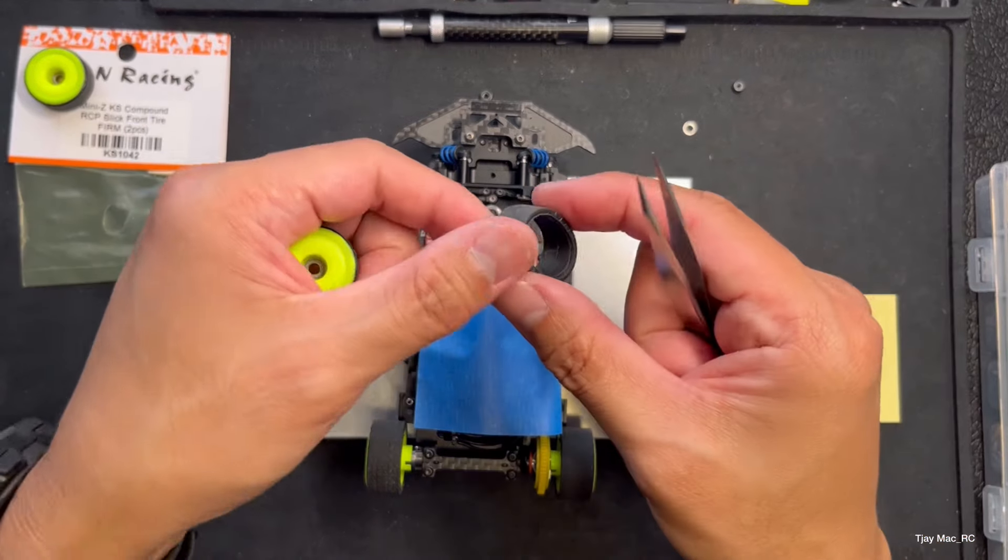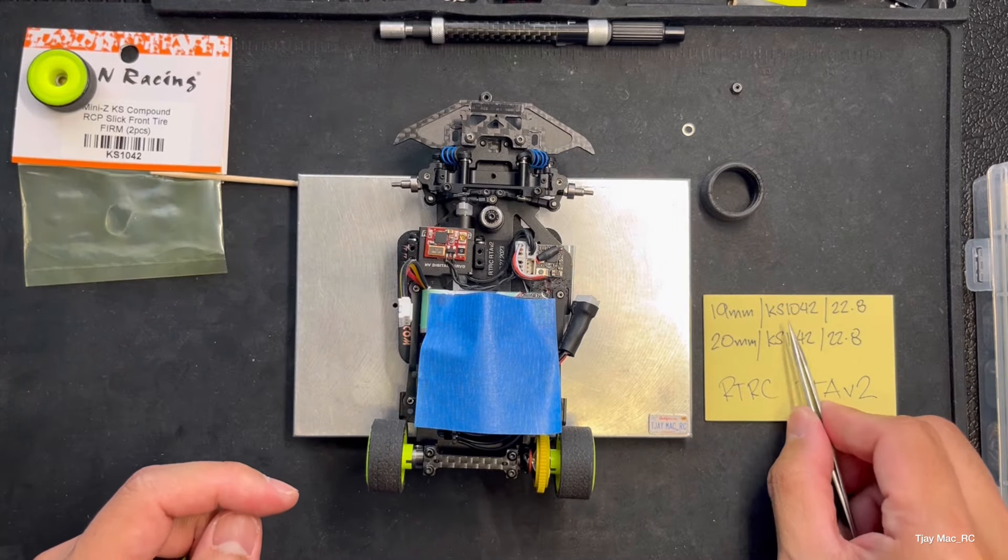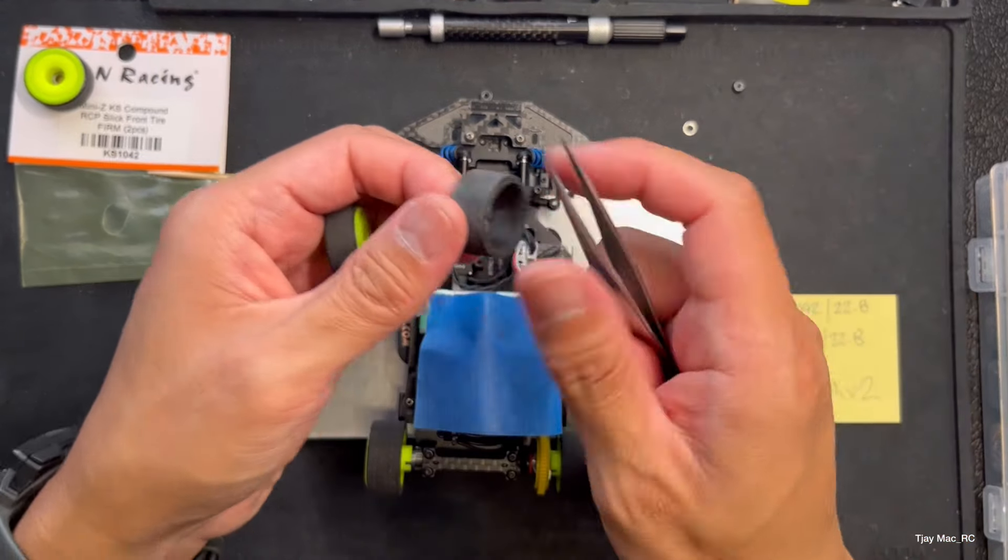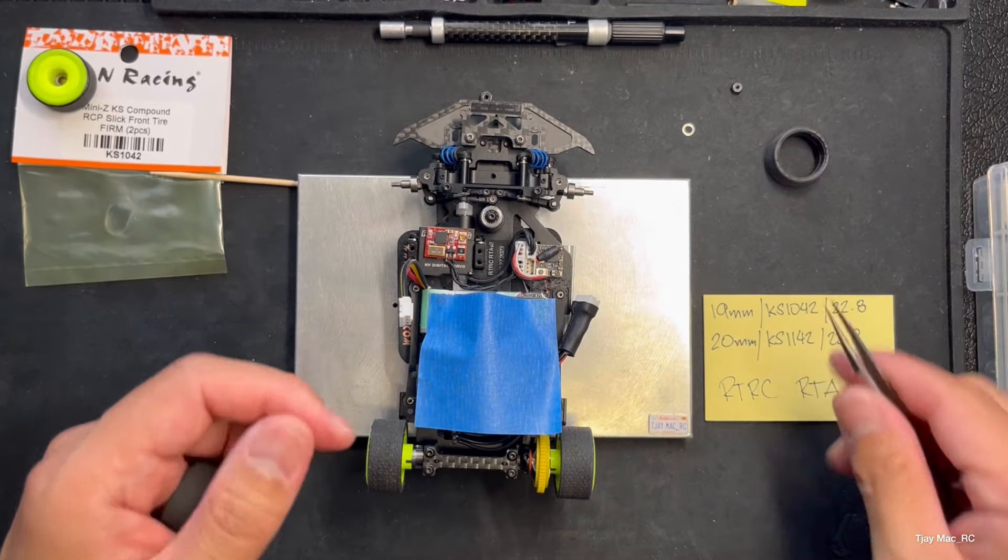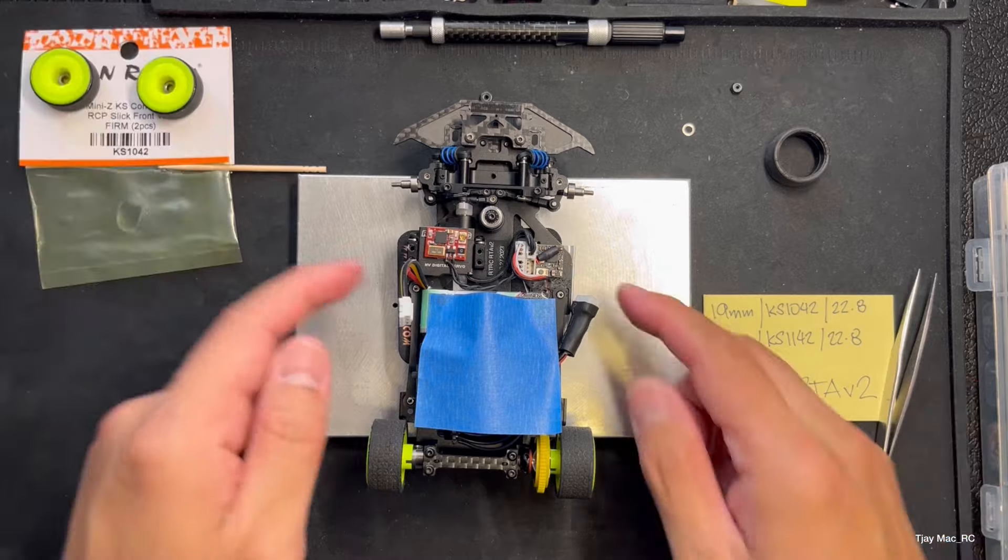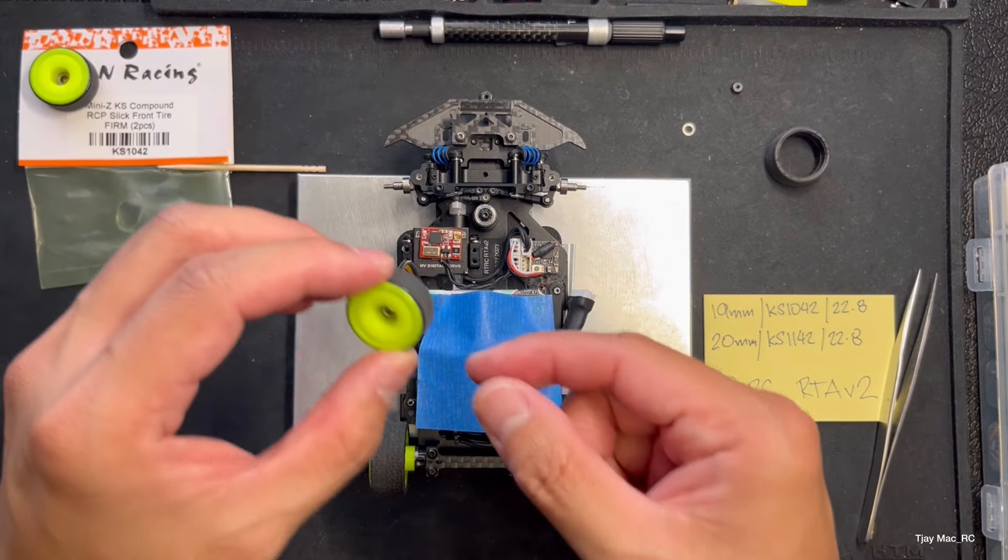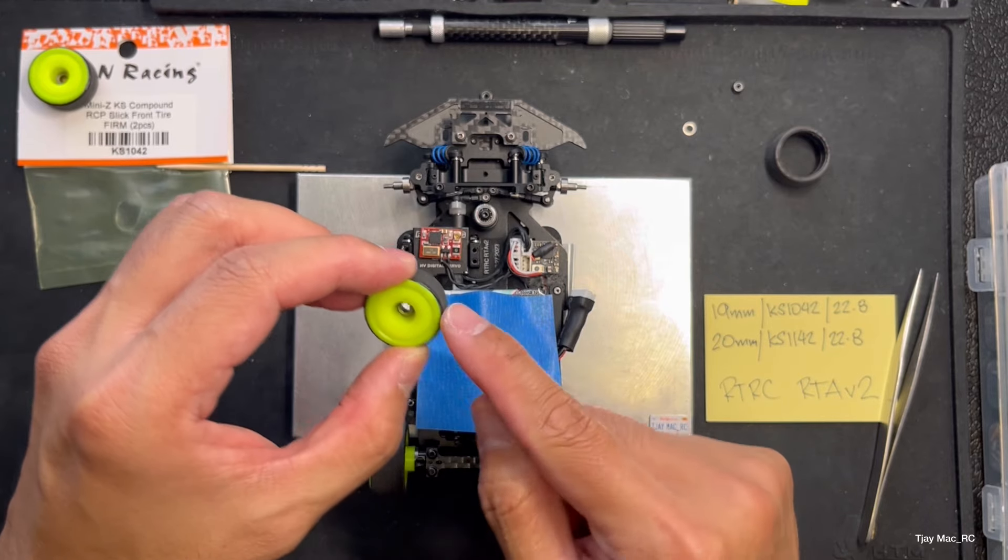This one has more flex from the sidewall, so you have more initial turn in that you can control. You put glue if you want less of that dig in. Anyway, again, this is the RTRC RTA version 2 with the traction roll, and I'm hoping that this will fix that traction roll issue that I have.